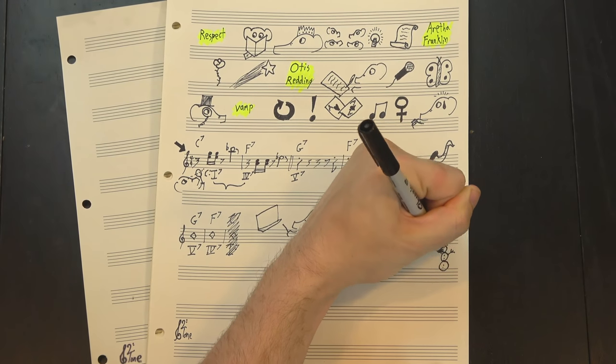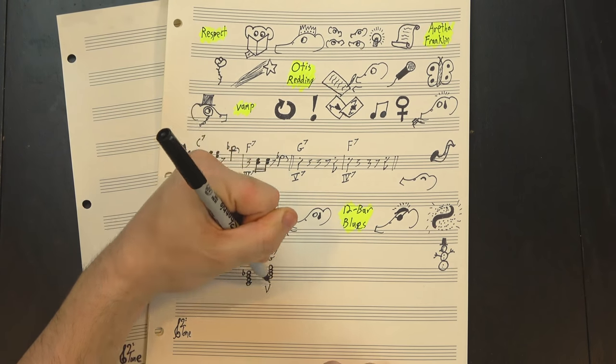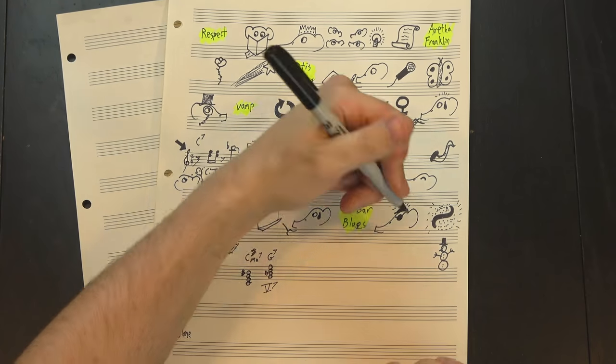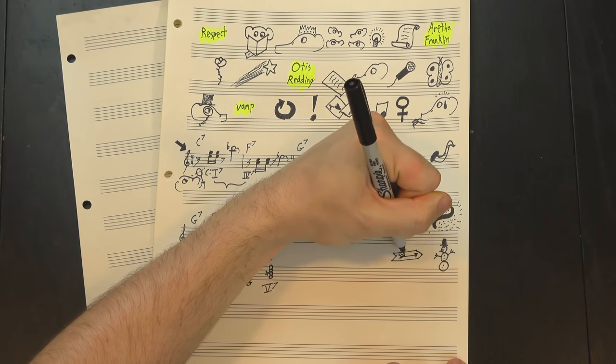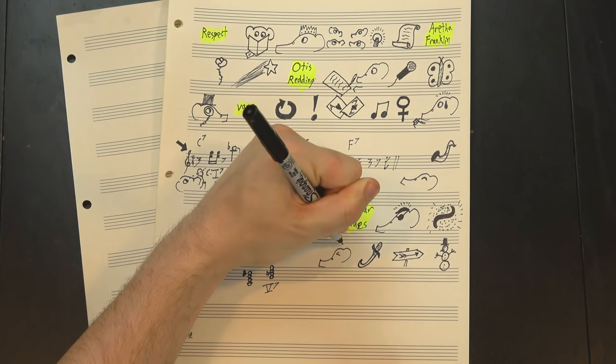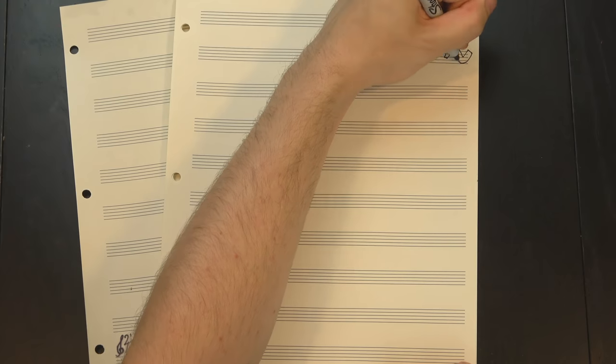We can also see blues influence in the chord qualities. They're all dominant 7ths. Traditionally, you'd expect only the V chord to be dominant, with the I and IV chords being major 7ths instead, but one common feature of the blues is that all the chords are dominant, which adds a bit more of an edge, so no matter where you go, it never feels completely settled. Still, it's hard to deny that the chords here are fairly straightforward.